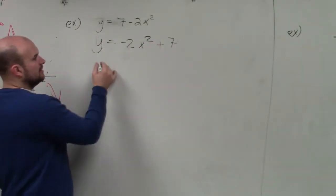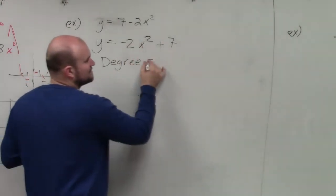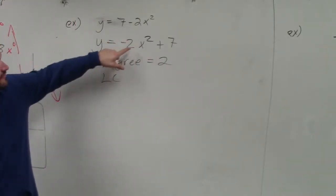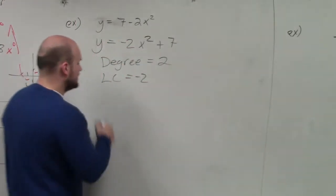This one's fairly simple. Let's identify the degree. The degree, again, is the highest exponent, which is our highest power, which again is 2. The leading coefficient is the value in front of that, which is negative 2.